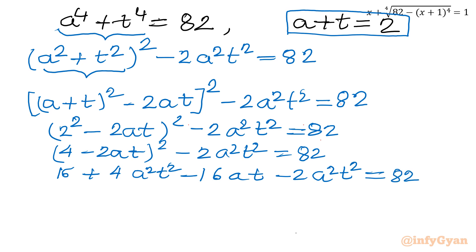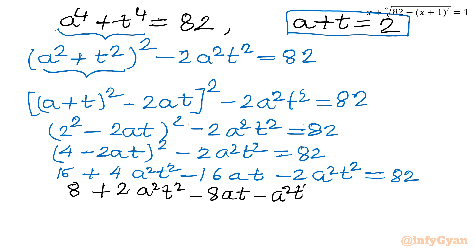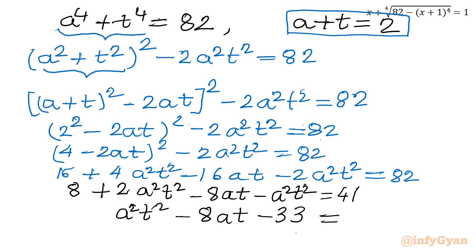The equation is divisible by 2, so dividing through: 8 plus 2A²T² minus 8AT minus A²T² equal to 41. This simplifies to A²T² minus 8AT minus 33 equal to 0. This is a quadratic equation in AT.